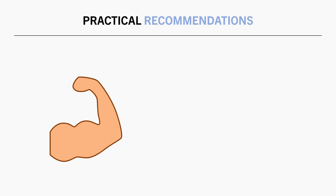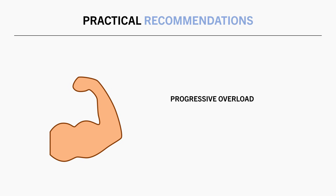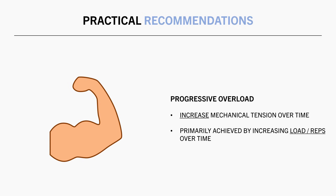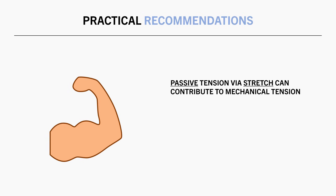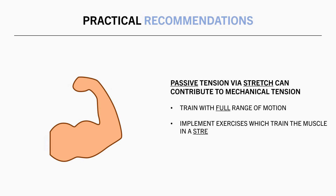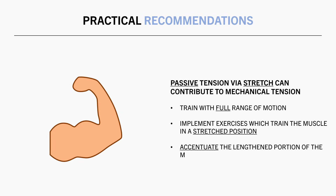However, from a long-term perspective, we want to see progressive overload by increasing mechanical tension over time. This means that over time, trainees should probably see some sort of increases in load lifted or reps performed as a result of effective training. And lastly, passive tension appears to promote high mechanical tension on the muscle via stretch. This has a few practical recommendations: first, it reiterates the importance of training with a full range of motion, especially in the lengthened position; second, we may want to implement some exercises which train the muscle in a highly lengthened position; and lastly, it may be a good idea to implement some slight pauses or control the eccentrics extra slow in the lengthened position of some exercises. Trainees can use these general guidelines to maximise mechanical tension.